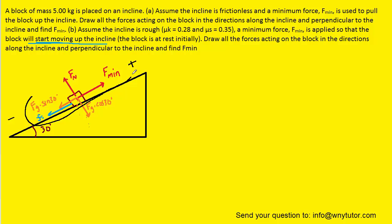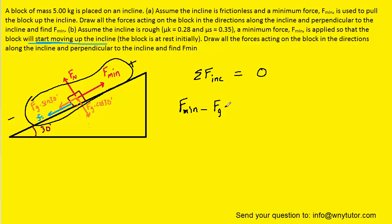To find Fmin, we sum the forces directed along the incline and set them equal to zero, again assuming no acceleration. We have three forces: positive Fmin (up the incline), minus Fg·sin(30°), and minus the static frictional force fs. Adding Fg·sin(30°) and fs to the right-hand side gives Fmin = Fg·sin(30°) + fs.